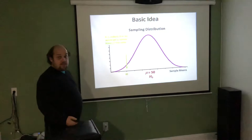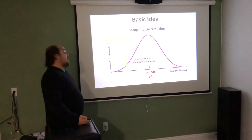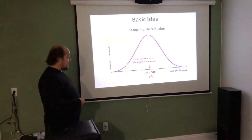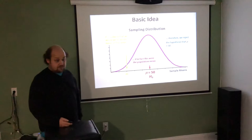We say this distribution represents what it should look like if the mean was 50. Then we find the sample value — in that first graphic, the average age of the class was 20. This 20 is far away from that mean of 50. If it really were true that the mean was 50, it's unlikely that we'd get a sample value of 20. Therefore we reject the hypothesis that the true mean was 50.